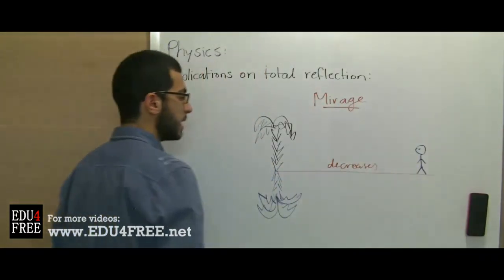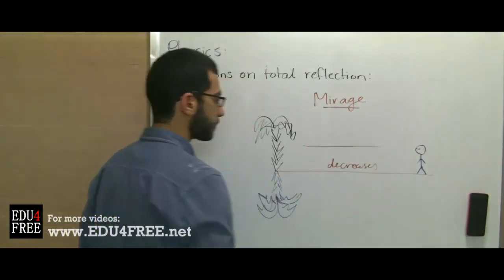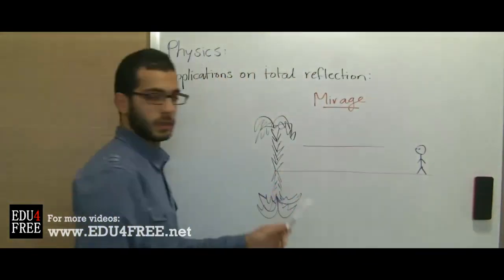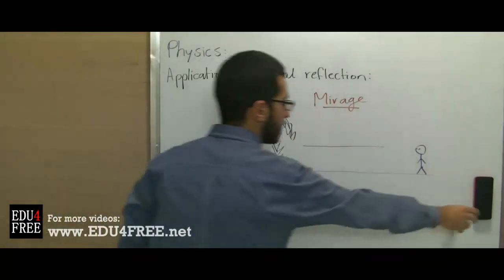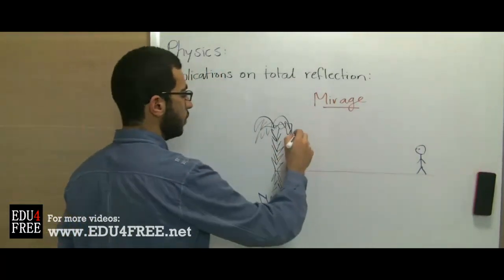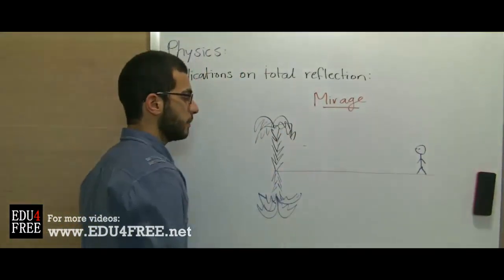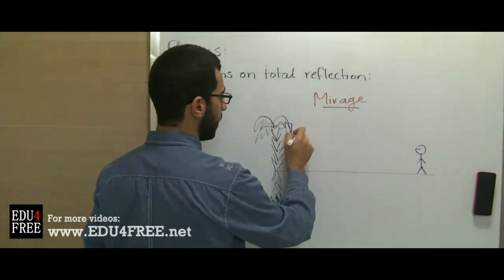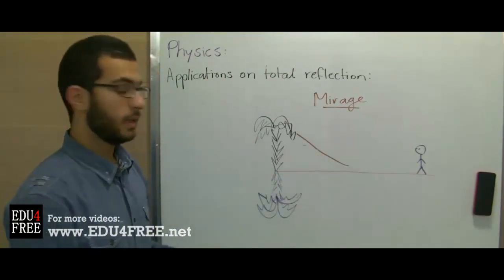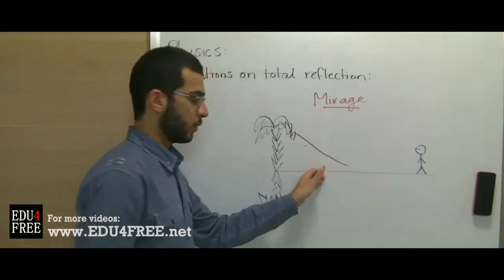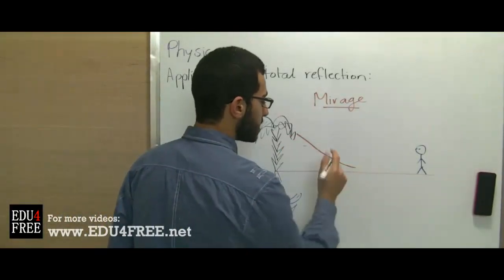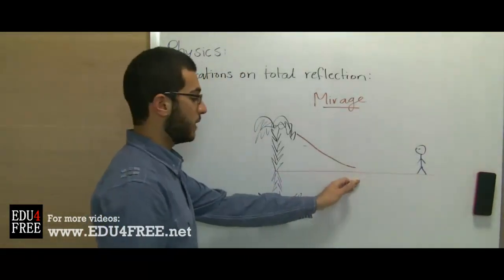So the density of this layer decreases and it becomes less than the density of the air in the upper layer. Then when the light falls on the palm tree and then it's reflected so that you can be able to see the palm tree, the light ray shall move from up to down. So when it goes from the palm tree downwards, the angle of incidence on the air becomes more than the critical angle.